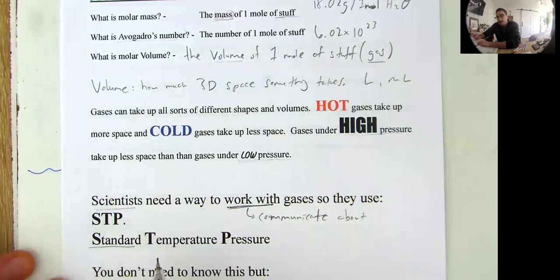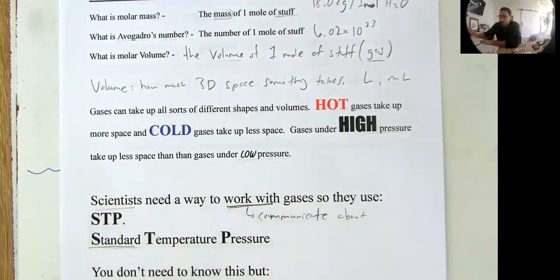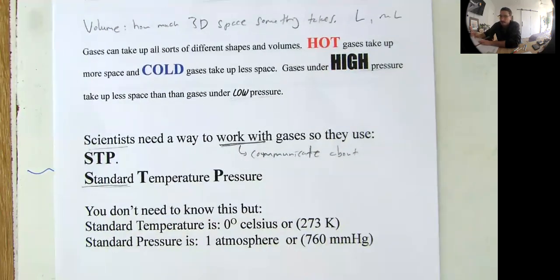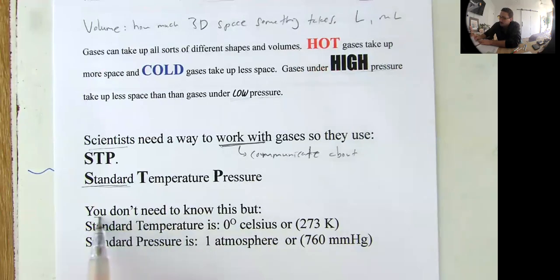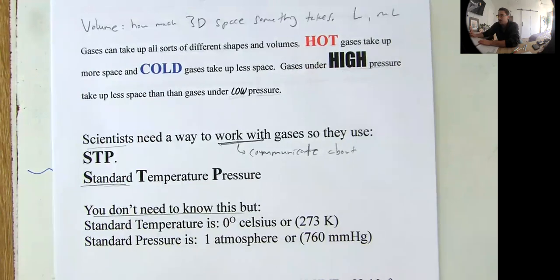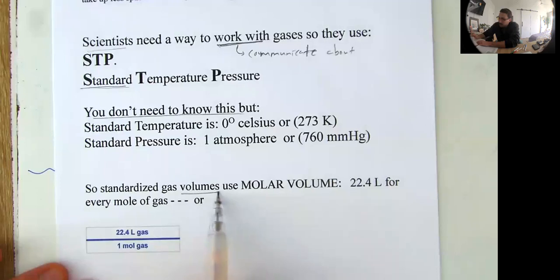So they use something called standard temperature and pressure. So all of their experiments are converted into, all their experiments with gases are converted into standard temperature and pressure so that the whole scientific community over the whole planet can communicate easily and correctly. So here it is. You don't need to know this. You don't need to know this for this assignment, but standard temperature is zero degrees Celsius or 273 Kelvin. Standard pressure is one atmosphere. Okay. So since everything is standardized, there's going to be a certain volume for gases.